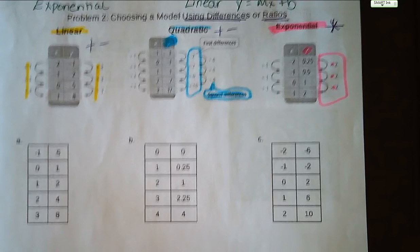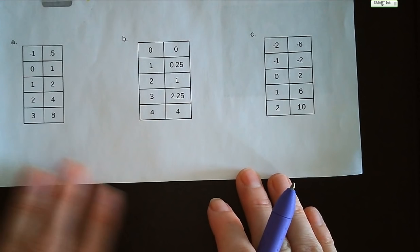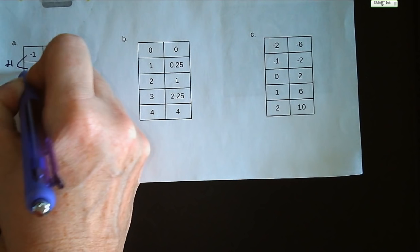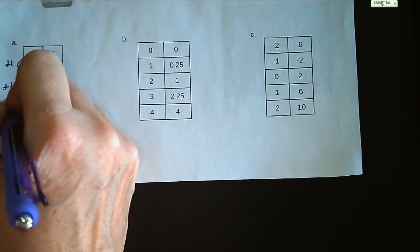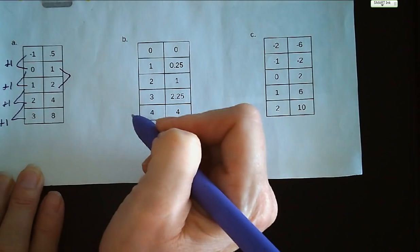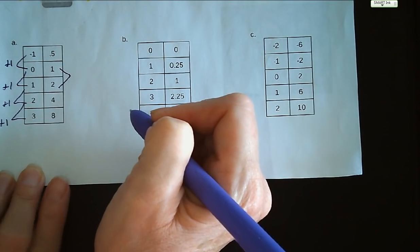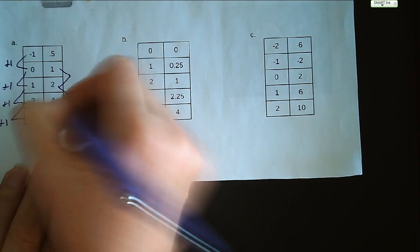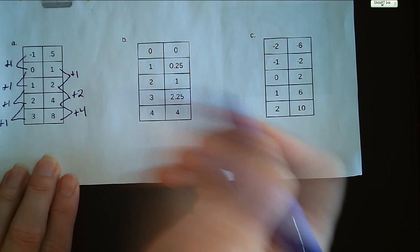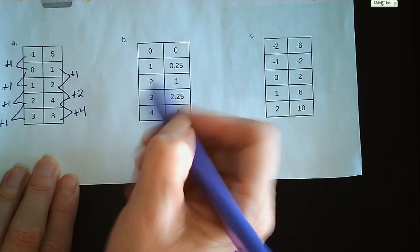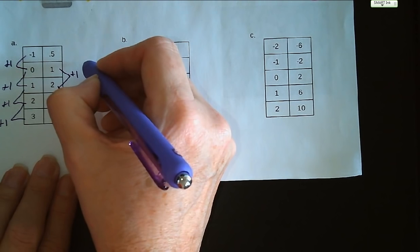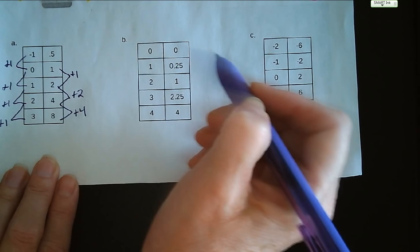All right. So when we look at letter A, let's first start with our differences and figure out what we're potentially doing here. We're adding 1 to each of the X values in problem A. For the Y values, we're adding 1, then adding 2, then adding 4. So it's definitely not linear. Looking at the second differences, the first one is 0.5, then 1, then 2.